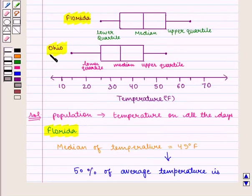Also for Ohio we see that the upper quartile, that is the third quartile, is 45 degree Fahrenheit.